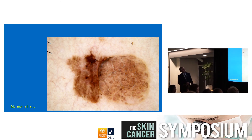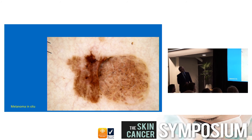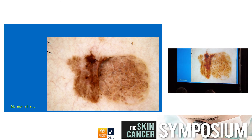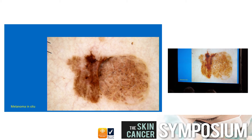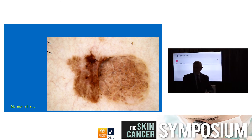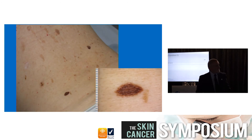This is the gradual border of a naevus - you can see it fading out all the way around. And this is the abrupt border of the melanoma component. That's one of the reasons why chaos of border abruptness is a very good clue, especially when a melanoma arises in a naevus, because we know the naevus will have a gradual border and the melanoma may have an abrupt border, or a mixture of both.